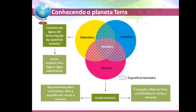Vamos falar sobre a hidrosfera. A hidrosfera é o conjunto das águas sob forma líquida da superfície terrestre. Ela é representada por mares, oceanos, rios, lagos e água subterrânea. Percebam que não coloquei geleiras — a água em forma sólida, como o gelo das calotas polares, não faz parte da hidrosfera. A hidrosfera é constituída basicamente por mares, oceanos, rios, lagos e água subterrânea.